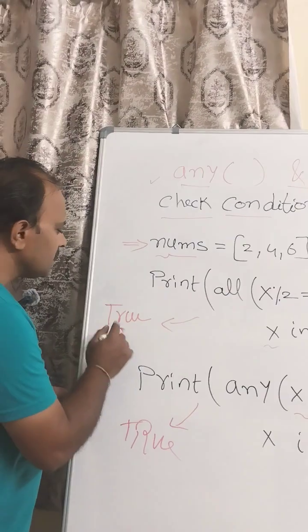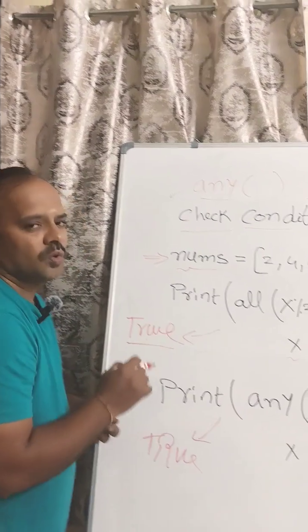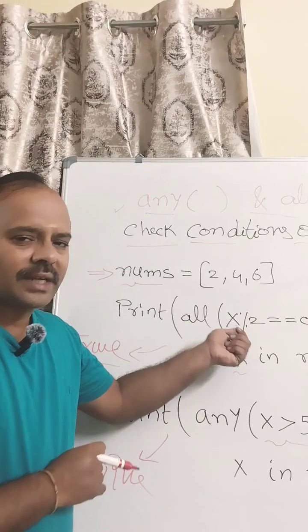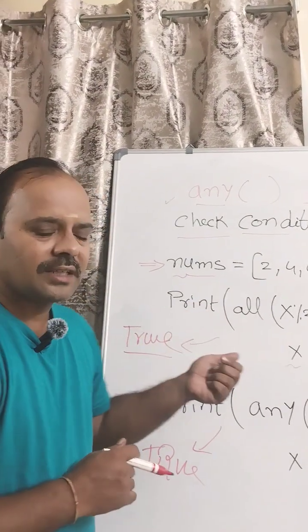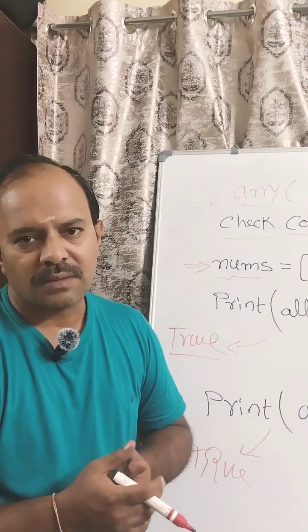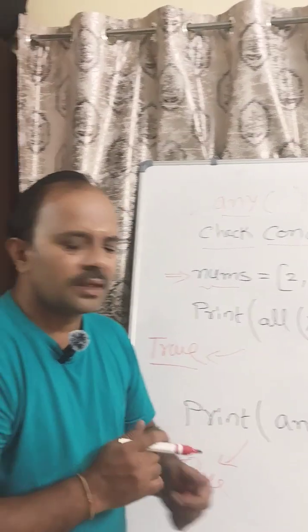This will result in the boolean expression true. If any of the values is not satisfying the condition, this will result in the boolean output false. Similarly, we have one more method called any.